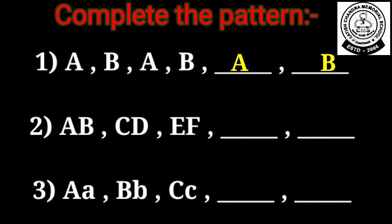Then come to question number 2. It is given AB, CD, then EF. So what will be the next 2 patterns? Yes, very good children. The next 2 patterns will be GH and IJ.